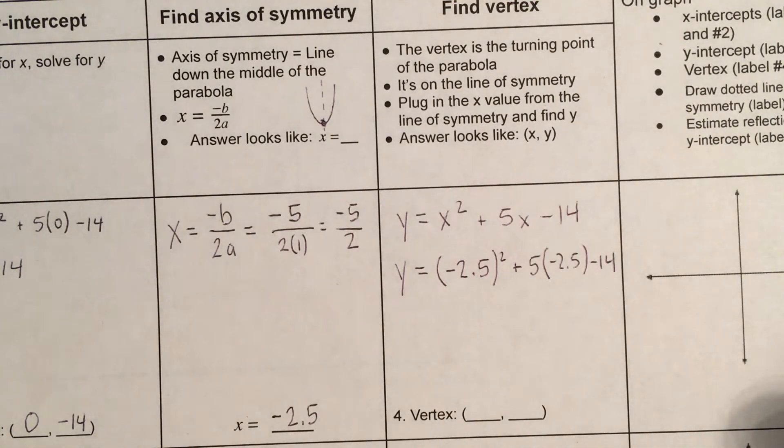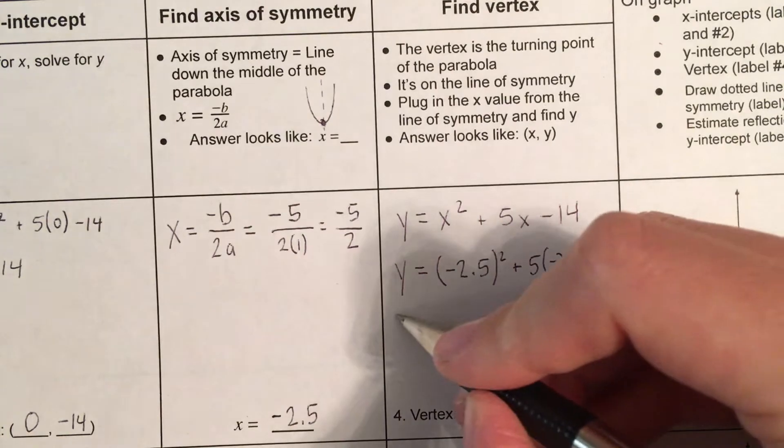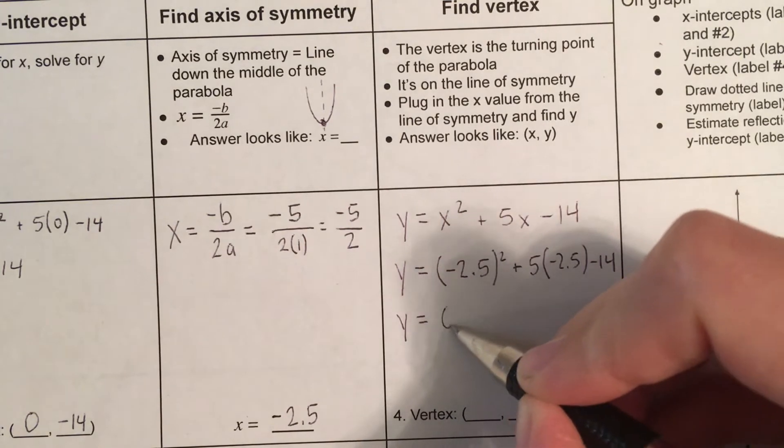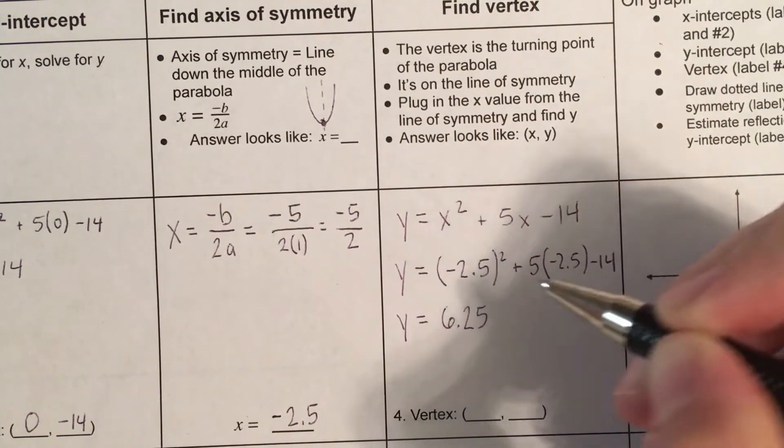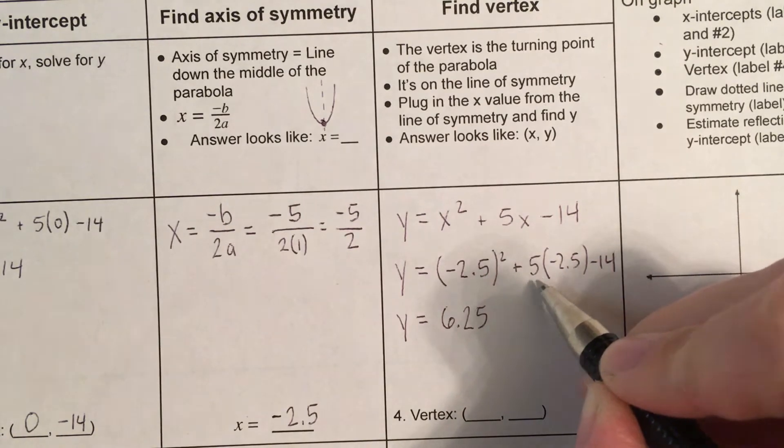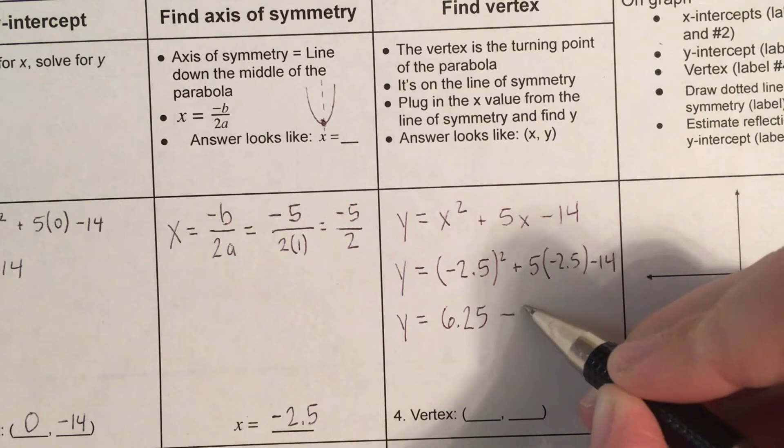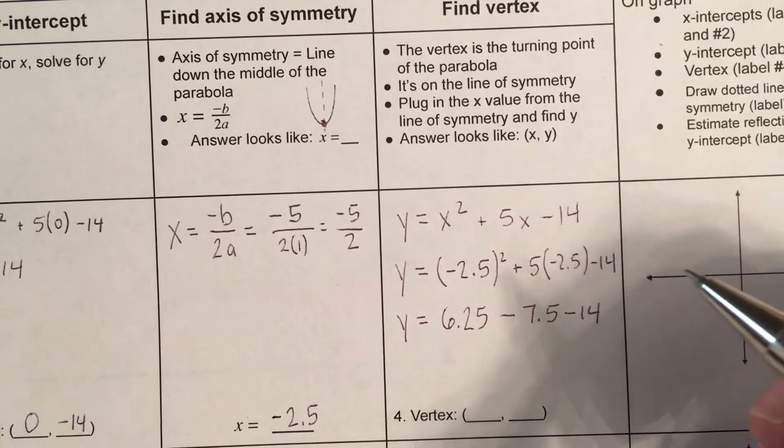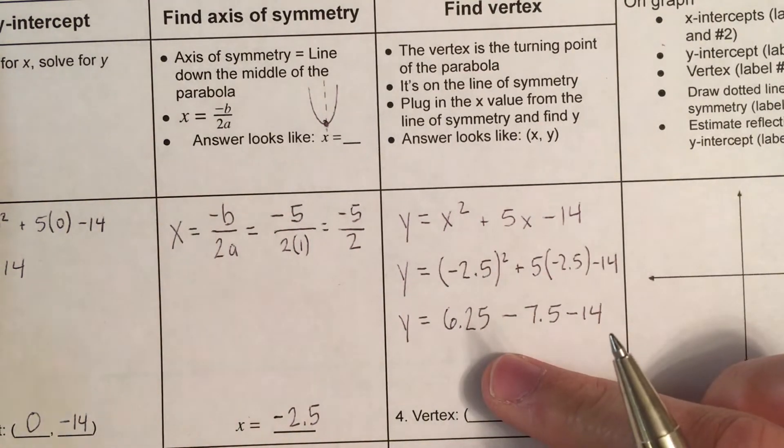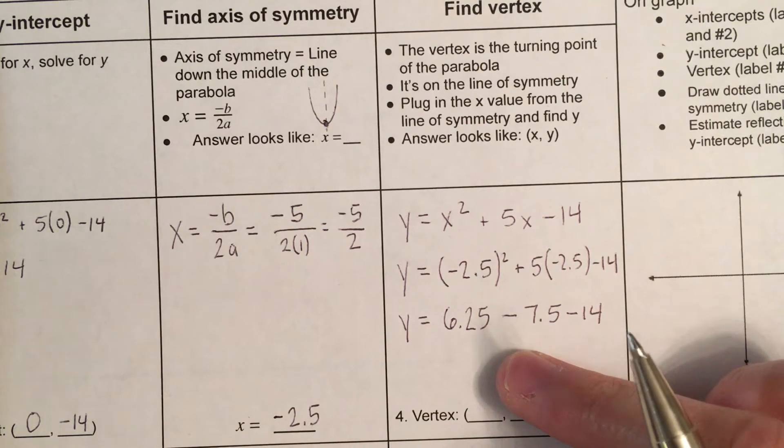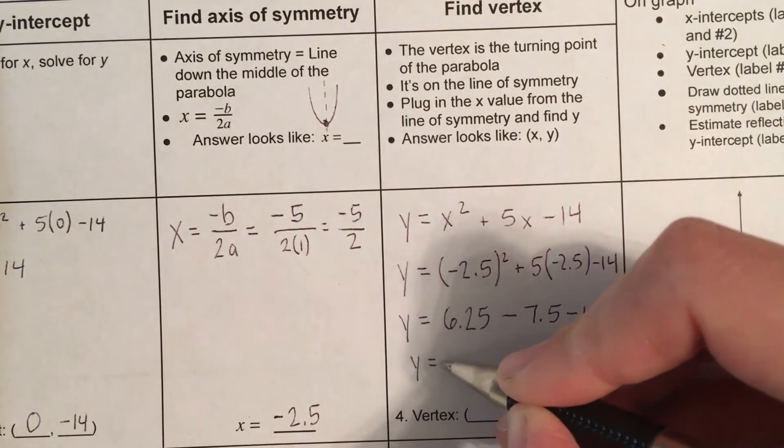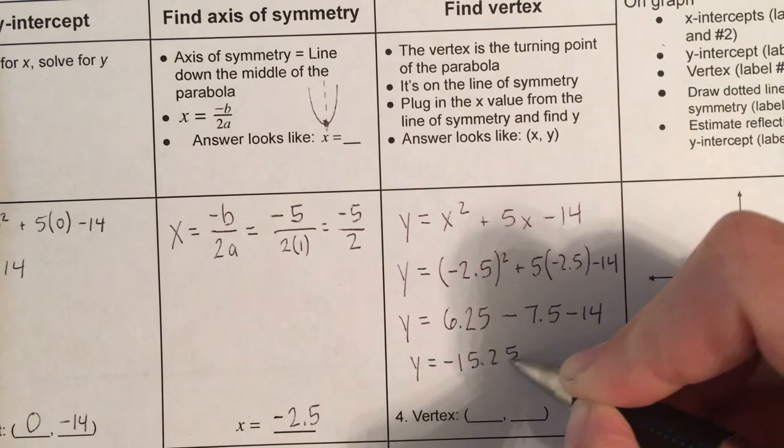And now, I'm going to do the math. It's a little annoying, but just use a calculator. Negative 2.5 squared. So, negative times negative is positive. So, we're going to be positive. And 2.5 squared is 6.25. Now, positive times negative is negative. And 5 times 2.5 is 7.5. And then minus 14. And now, we're going to just put all this in a calculator at once. So, this is 6.25 minus 7.5 minus 14. Negative 15.25.